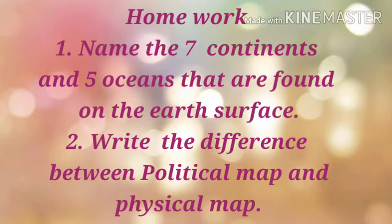Question number 1 is: name the 7 continents and 5 oceans that are found on the earth's surface. Question number 2: write the differences between a political map and a physical map. Students, these questions are from your chapter number 1. Do your homework properly in neat and clean handwriting. Be safe, stay at your home, keep smiling, and thanks for watching the video.